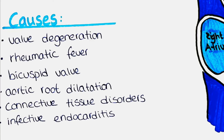The most common cause of aortic regurgitation is valve degeneration. The gradual wear and tear on the aortic valve over time can lead to inadequate closure and subsequent regurgitation. Another common cause is rheumatic fever, which occurs in a setting of unmanaged streptococcal infections that result in scarring and deformity of the heart valves, including the aortic valve.